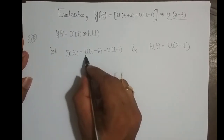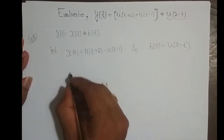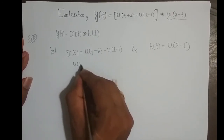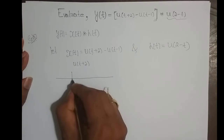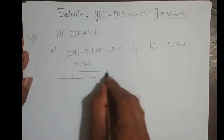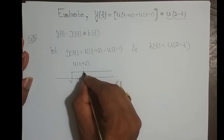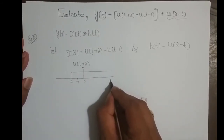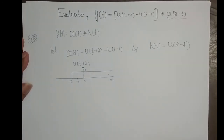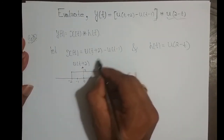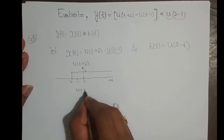The input signal x(t) is the combination of these two signals. We will plot them and then subtract. How does u(t+2) look? This is nothing but u(t) shifted left two times. So at t = -2, the signal starts and goes up to infinity with amplitude 1. This sub-signal has to be subtracted with u(t-1).